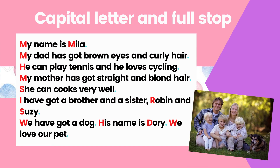In a paragraph, there is use of capital letters and full stops. What are they? A capital letter is used when we want to begin a sentence or when we want to write a proper name. Meanwhile, a full stop is used at the end of a sentence, usually when there is nothing more to write. For example: My name is Mila. We use capital letter M for 'My' when we want to start writing, and capital letter M for 'Mila' because Mila is a proper noun.